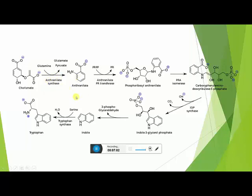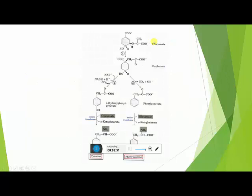In step 9, Anthranilic acid — the precursor for tryptophan — undergoes different chemical reactions. It gets converted to Phosphoribosyl anthranilic acid, with phosphoribosyl pyrophosphate attaching to Anthranilic acid. At the end of these different steps, at the indole ring structure, the amino acid serine is added and a water molecule is released, forming tryptophan, which contains an indole ring structure. The enzyme involved is Tryptophan synthase.